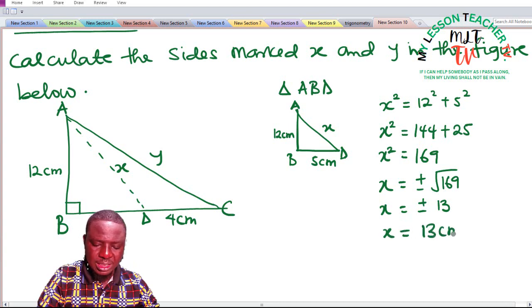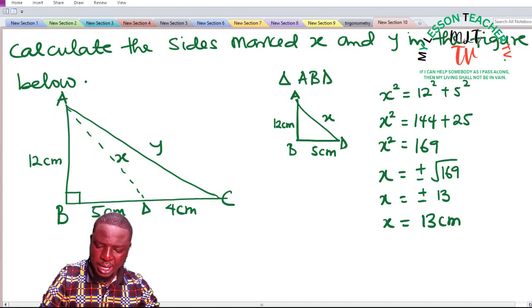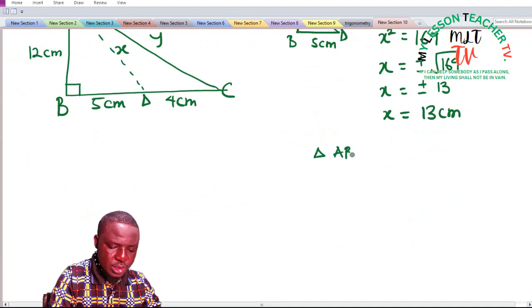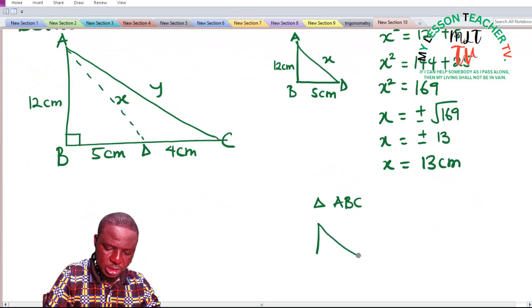So x is equal to 13 centimeters. What about y? How do we get our y? If you consider triangle ABC, in triangle ABC we have it to be this. If I'm to sketch it...